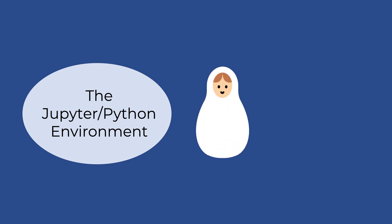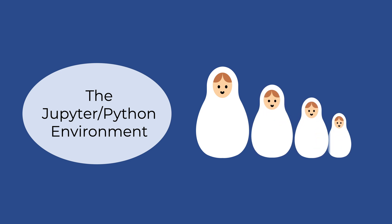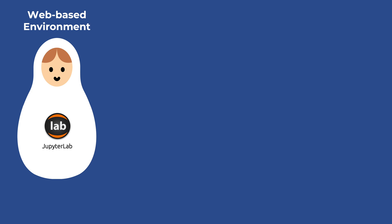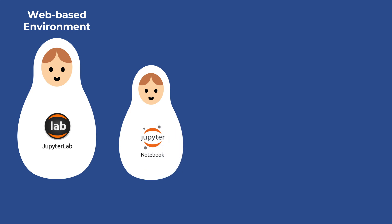An easy way to think about the Jupyter Python environment is to consider it as a Russian doll — those wooden dolls of decreasing size nested one inside another. The biggest doll is JupyterLab, which is a web-based environment where we develop our code. Then there is JupyterNotebook, which is where we create our workflows as the combination of code and narrative.